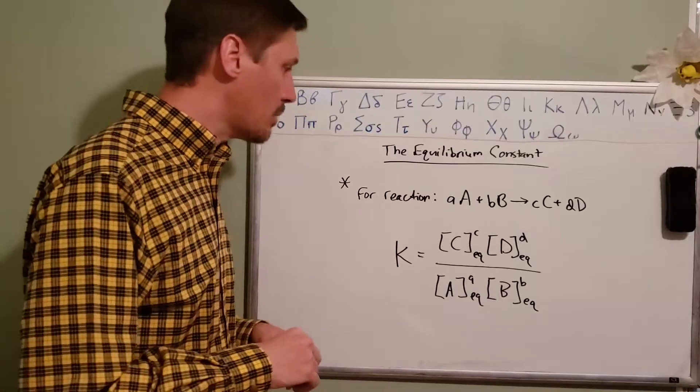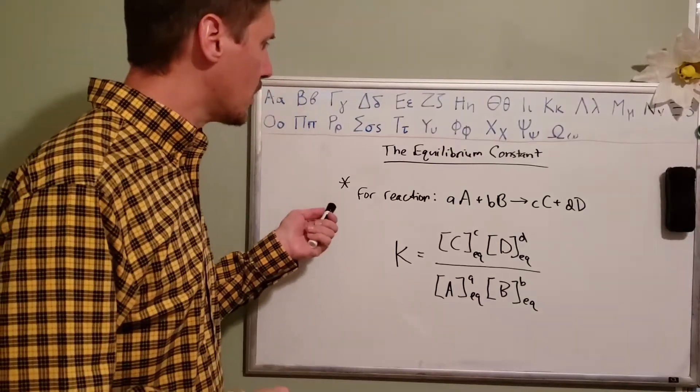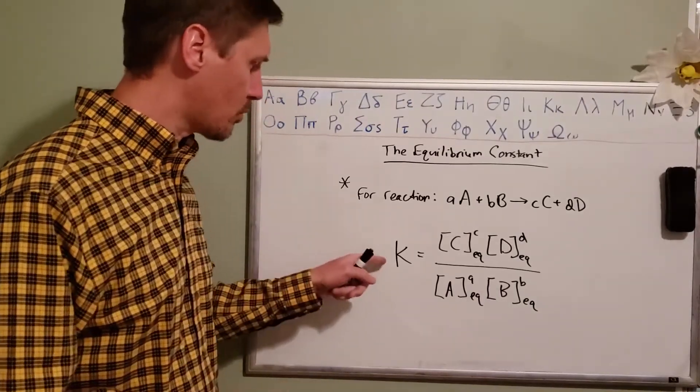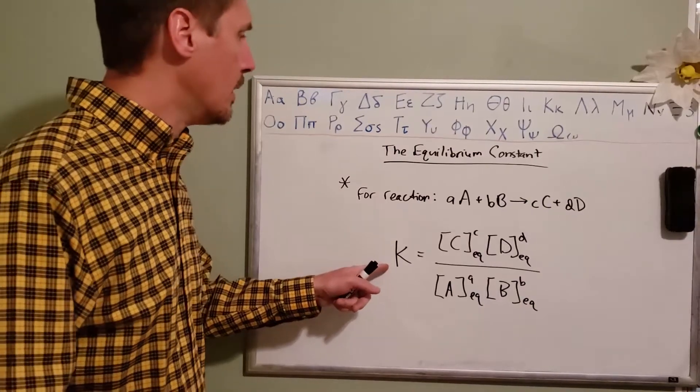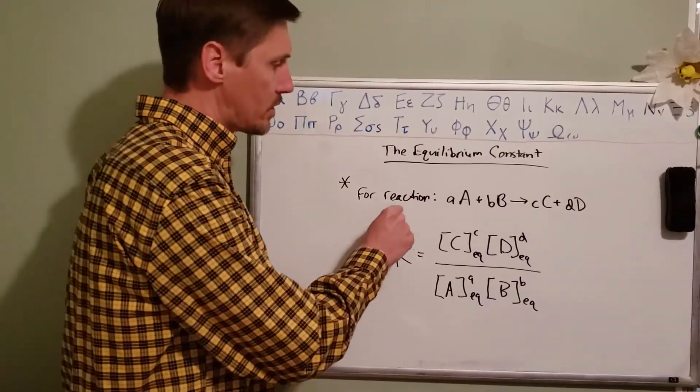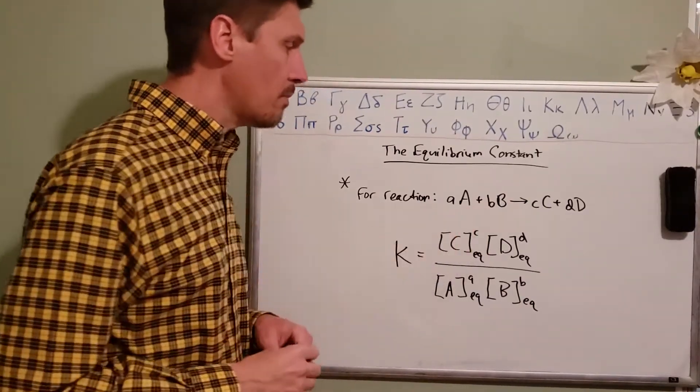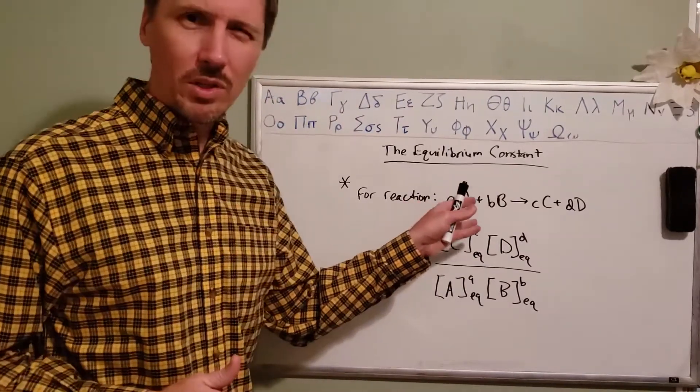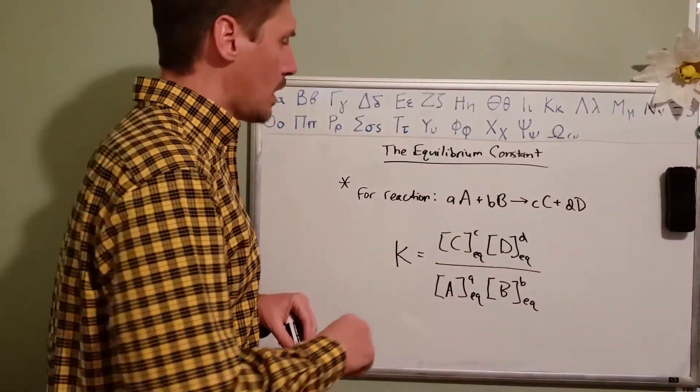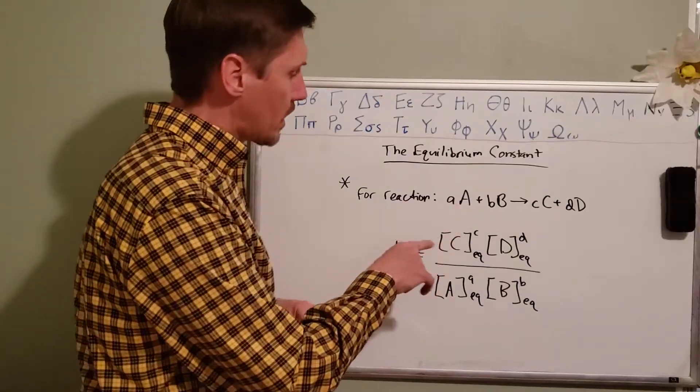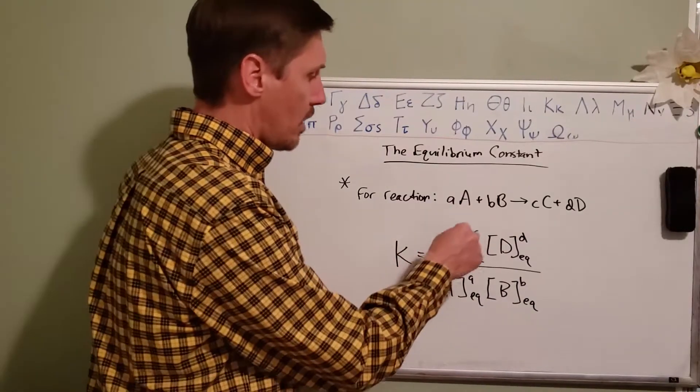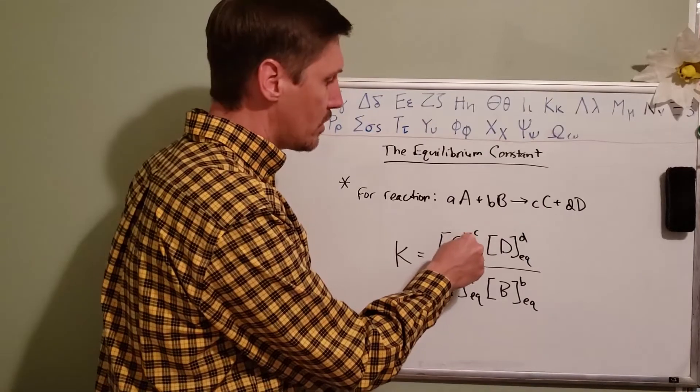The equation for the equilibrium constant, represented by capital K, says that for a reaction in this form—we've seen that form before, we used it for the rate equation—for example, if it's in this form, then the concentration of the products raised to the power of the matching coefficient for that particular product.